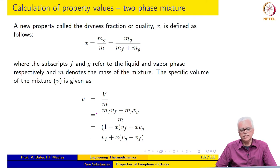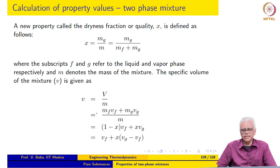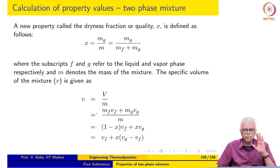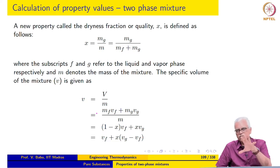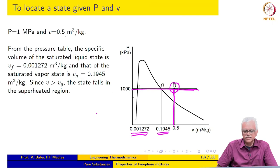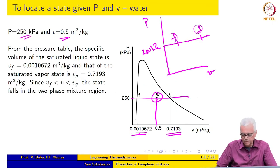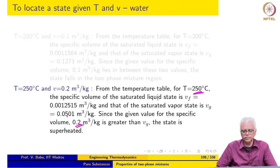Now we turn to the process of calculating property values. We have located the state — it is either a compressed or subcooled liquid, a two-phase mixture, or a superheated state. How do we calculate property values? We are not provided a table separately for compressed liquid states, which is okay — we will make certain simplifications. For now, let us say the state lies in the two-phase mixture region. How do I calculate, for example, specific internal energy or specific enthalpy?